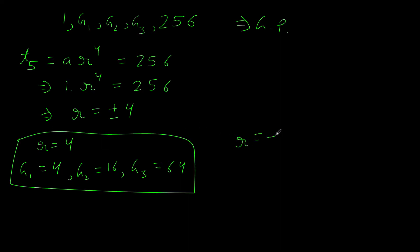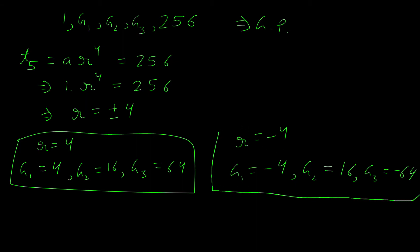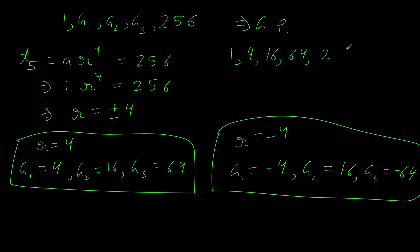Similarly, taking R = -4: G1 = AR = -4; G2 = AR² = 16; G3 = AR³ = -64. So there are two cases. Either we insert 4, 16, 64 between 1 and 256, giving the GP 1, 4, 16, 64, 256 with common ratio 4; or we insert -4, 16, -64, giving the GP 1, -4, 16, -64, 256 with common ratio -4.